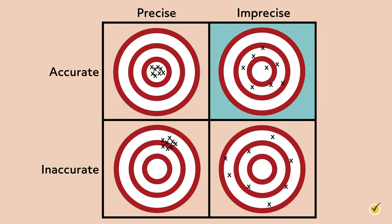In the lower left target, the measurements are precise but inaccurate. Although they are consistent, the measurements are not near the bullseye. Finally, in the lower right target, the measurements are neither precise nor accurate — they are inconsistent and not near the bullseye.